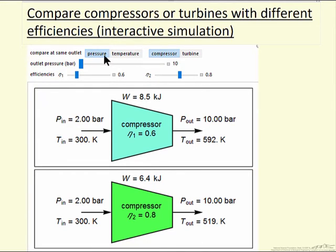So first we're looking at comparing for the same outlet pressure. The same feed pressure and temperature to each compressor. And to get to the same outlet pressure when the efficiency is 60 percent requires going to a higher temperature than if the efficiency is 80 percent.